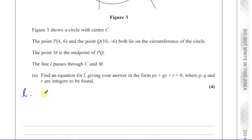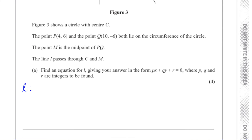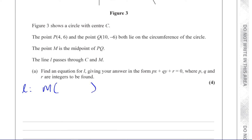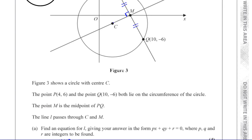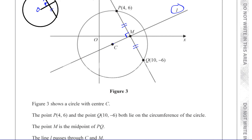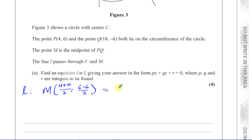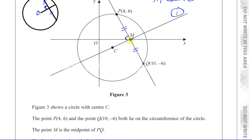For line L, we know it passes through point M. The coordinates of M, being the midpoint of PQ, are: x = (4 + 10)/2 = 7, and y = (6 + (−6))/2 = 0. So M lies on the x-axis — its coordinates are (7, 0).